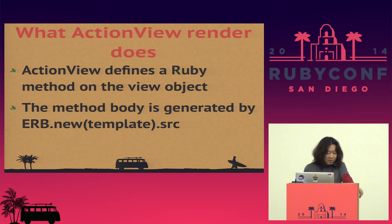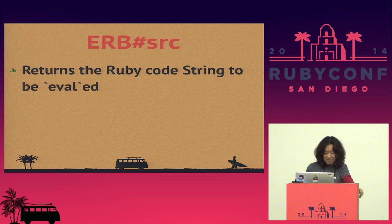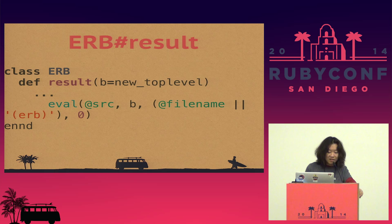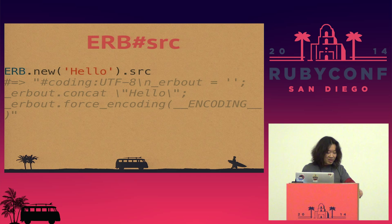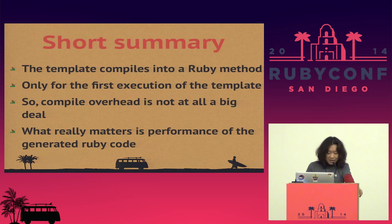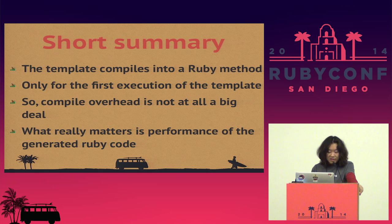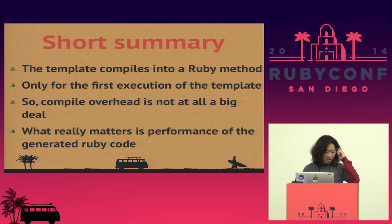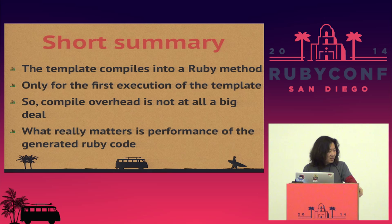What happens next is handler.call, which calls erubis_implementation.new.source — that's ERB.new.source — which returns the generated Ruby string, then puts that generated string into the method body. In summary, what ActionView render does is define a Ruby method on the view object, and the method body is generated by ERB.new.source. ERB.source returns the Ruby code string to be evaled. In Rails' case, we don't eval but define a method — but it works the same, basically. The template compiles into a Ruby method, and it compiles only once.